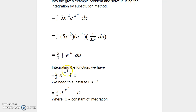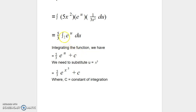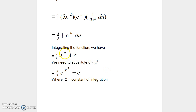Integrating the exponential function, we know that the integral of e^u is e^u + c. So therefore we can write it as 5/3 e^u + c, where c is a constant of integration. Now we want to express our solution in terms of x, not u. We started by letting u = x³, so wherever we see u we replace it by x³, giving 5/3 e^(x³) + c.